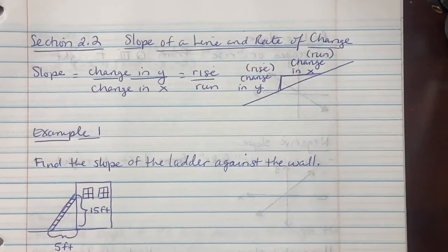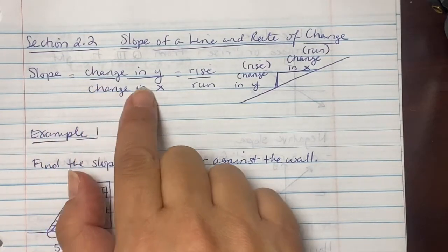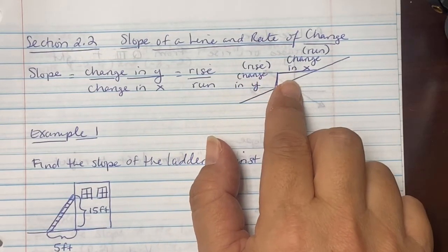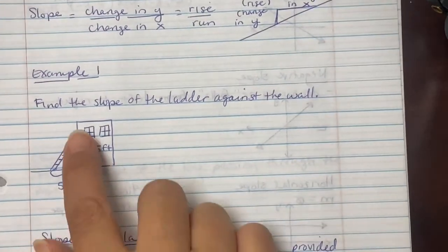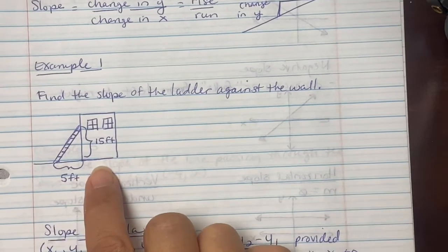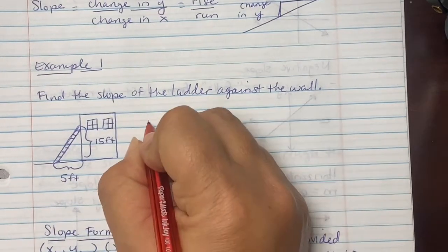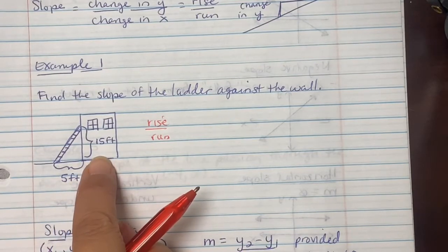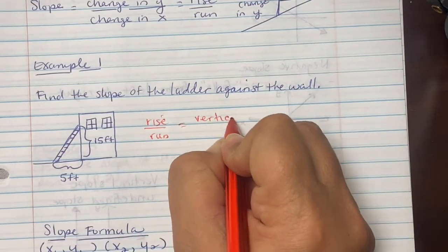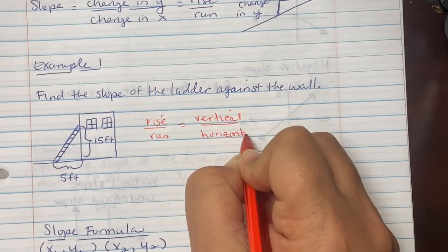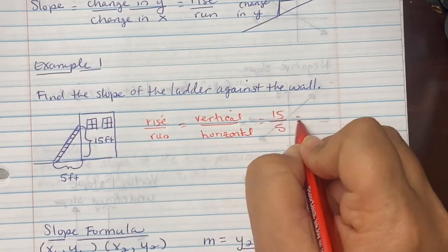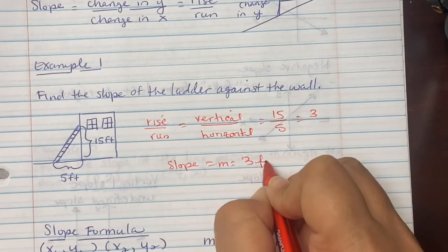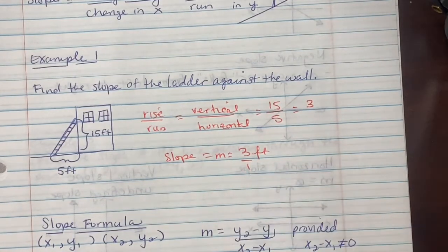Section 2.2: slope of a line and rate of change. Slope is the change in y over the change in x — rise over run. Rise is the change in your y value over the change in x, which is your run value. For Example 1, find the slope of the ladder against the wall. They gave us a horizontal value of 5 and a vertical value of 15. Rise over run is 15 over 5, which equals 3. So the slope, also known as m, is 3 feet, or 3 over 1 if we're graphing.